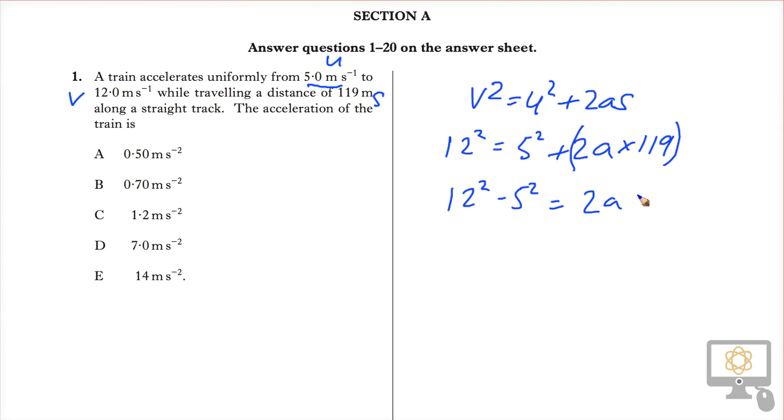We want to get a on its own, so we need to divide this side by all of this. So it's 12 squared minus 5 squared over 2 times 119, and that will give us a.